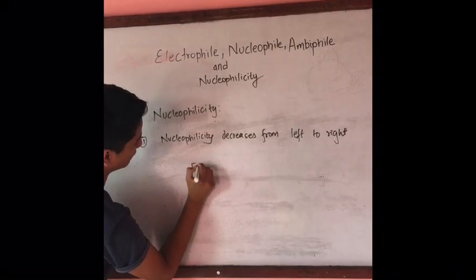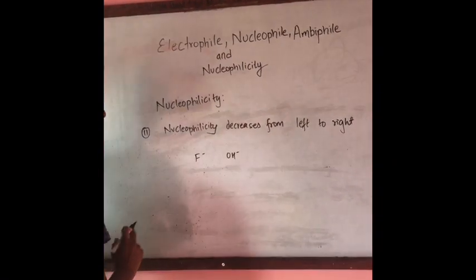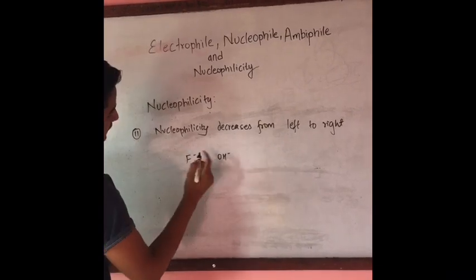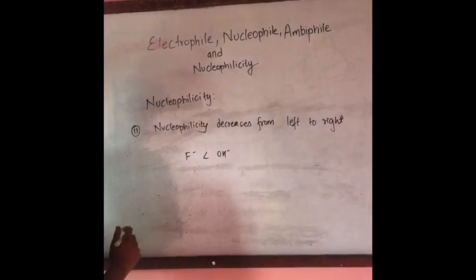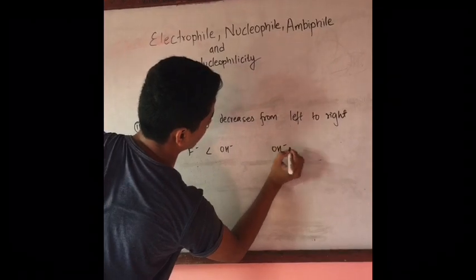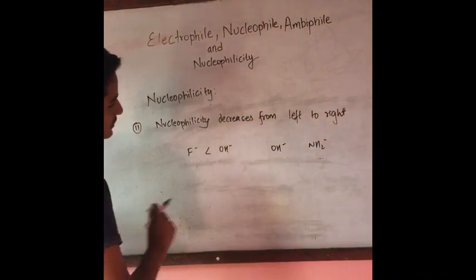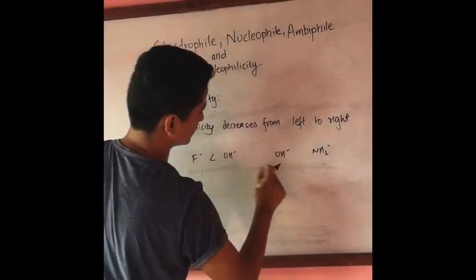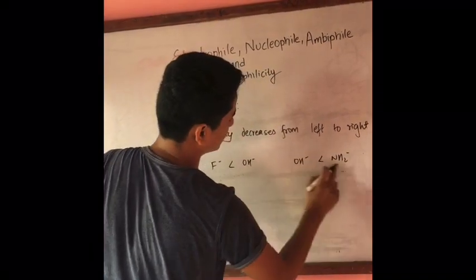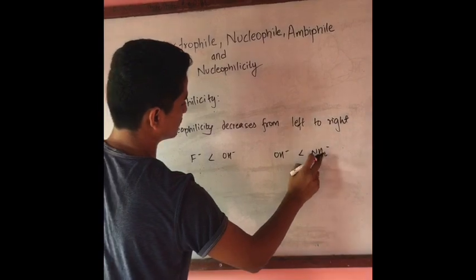The nucleophilicity order is: F⁻ is less than oxygen, which is less than nitrogen — so F⁻ < O < N in terms of nucleophilic strength across the second period.